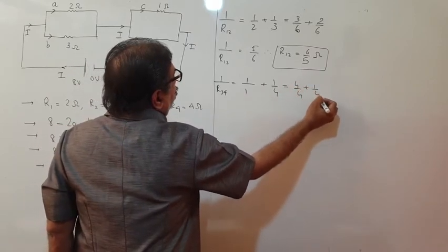Similarly, for R3 and R4 in parallel: 1/R34 = 1/1 + 1/4. LCM is 4, so 1/R34 = 4/4 + 1/4 = 5/4. Therefore R34 = 4/5 ohm. Now the circuit becomes two resistances in series with the 8 volt battery: R12 = 6/5 ohm and R34 = 4/5 ohm.